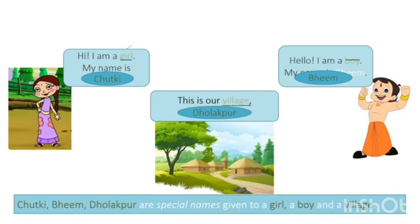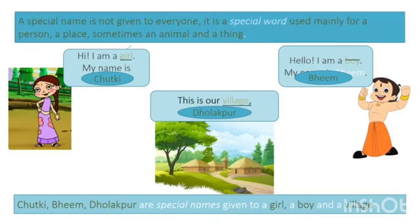Therefore, a special name is not given to everyone. It is a special word used mainly for a person, a place, sometimes an animal and a thing. Here, girl, boy, and village are naming words.